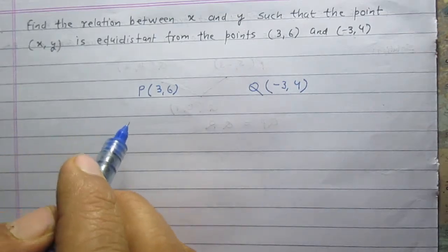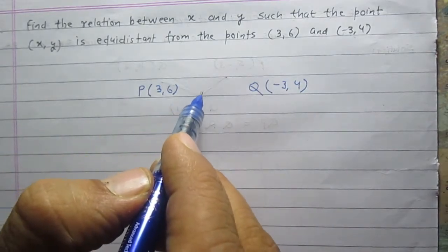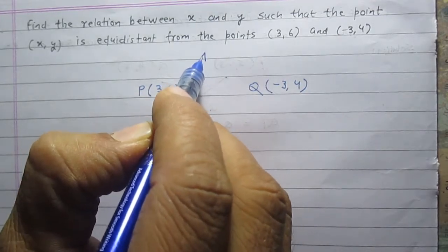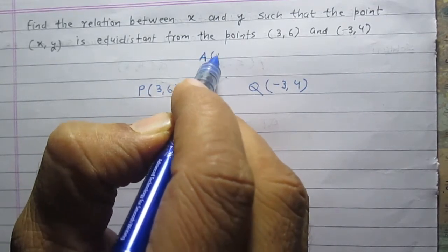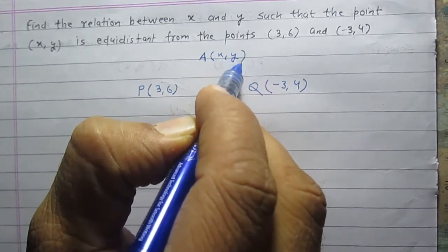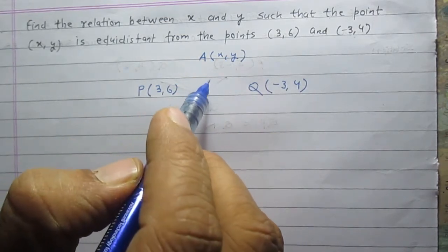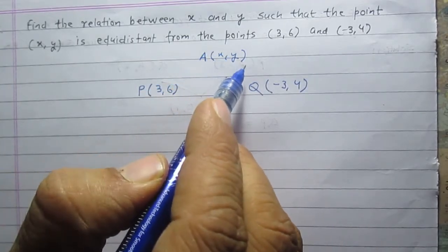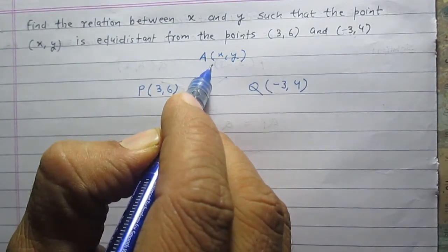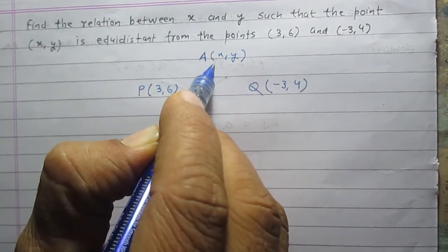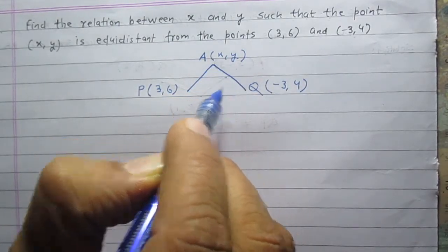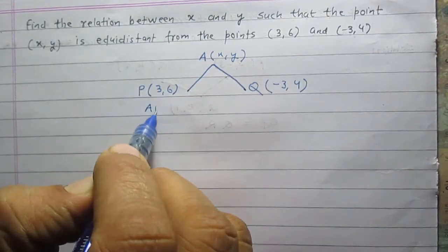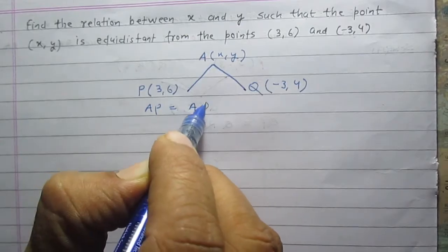The coordinates of the third point are x and y. Let us assume that this point is point A, with coordinates x and y. We are to find the values of x and y, given that A is equidistant from P and Q. So mathematically, we are given that AP is equal to AQ.